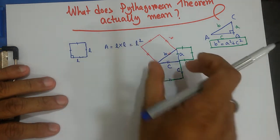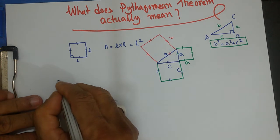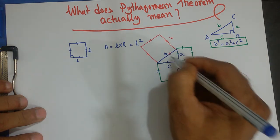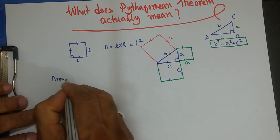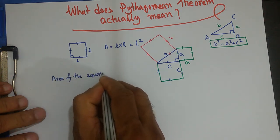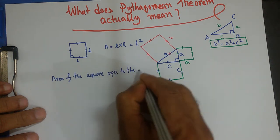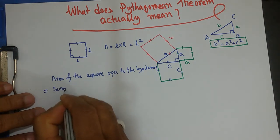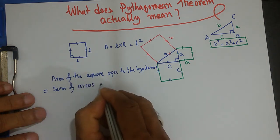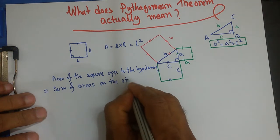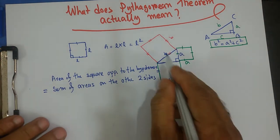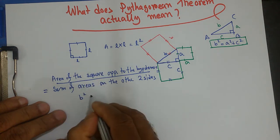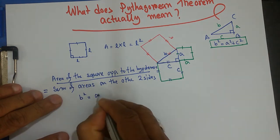The square area formula is L squared. So we can say that the area of the square on the hypotenuse — the hypotenuse being the side opposite the right angle — equals the sum of the areas of the squares on the other two sides. That's B squared equals A squared plus C squared.